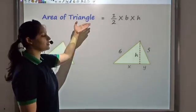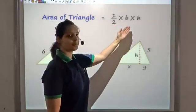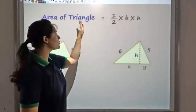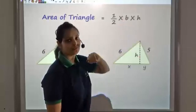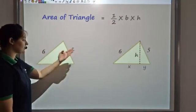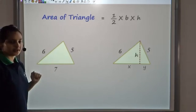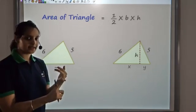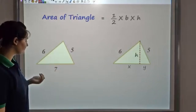We have seen that the area of a triangle is given by half into base into height. So for any triangle I can use this to find the area. Now say this is my triangle with three sides — I want to find the area of this triangle. I need to know the base and I need to know the height to find the area.